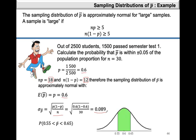We're interested in the probability that P-bar is within plus or minus 0.05 of the population proportion. The population proportion, which is the mean, is 0.6 and that's right in the center. So if P-bar is within plus or minus 0.05 of this value, then the interval we're considering will go from 0.55, which is 0.6 minus 0.05, up until 0.65, which is 0.6 plus 0.05. So our probability will be the probability that P-bar is between 0.55 and 0.65.